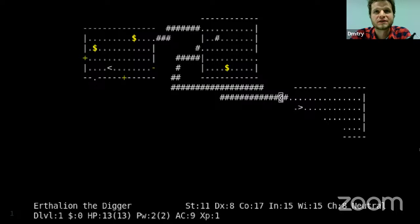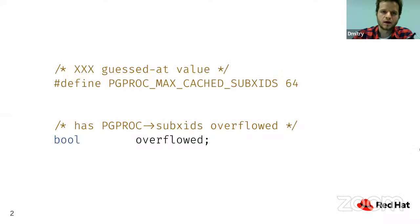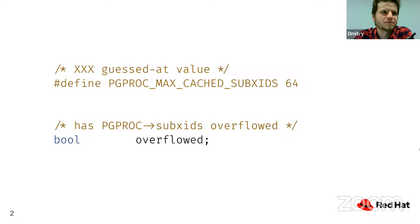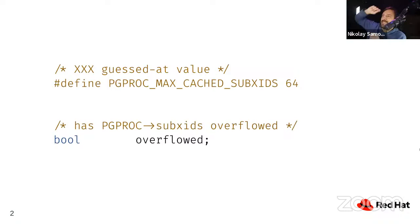Although the talk has a funny name about 'party tricks,' we have to start with a serious use case: subtransaction overflow. It's a very interesting problem that some users have stumbled upon over the last year or two. Nikolai mentions he has a huge blog post about it, and there are several cases.